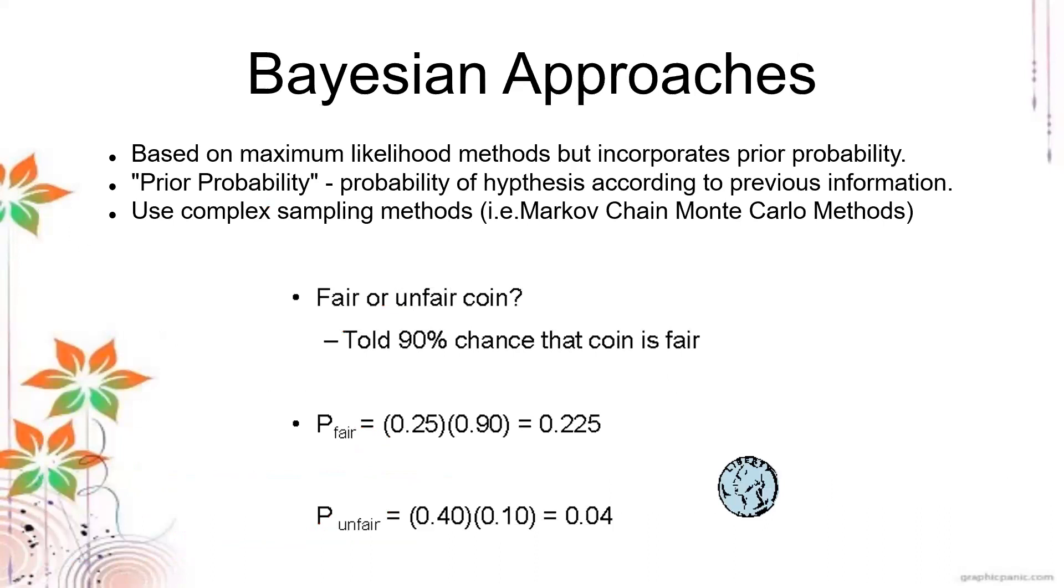Last but not least, we have the Bayesian approach. This is from the Bayes theorem, also based on maximum likelihood methods, but it incorporates a prior probability. When we say prior probability, the probability of the hypothesis according to previous information. Having previous information would be tricky because you need to have a previous hypothesis or supposition first. It uses complex sampling methods like Markov chain and Monte Carlo methods to generate this one.